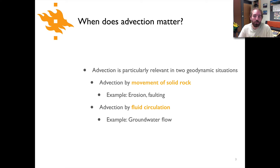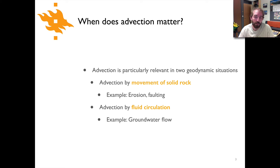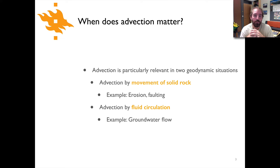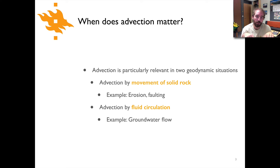There are basically two geodynamic situations in which advection is important. The first is advection by movement of solid rock, which could be erosion at the surface — acting to allow deeper rocks to move up toward the surface — or faulting. The second is advection by fluid circulation, such as groundwater circulation in mountainous regions where the flow velocities can be relatively high.